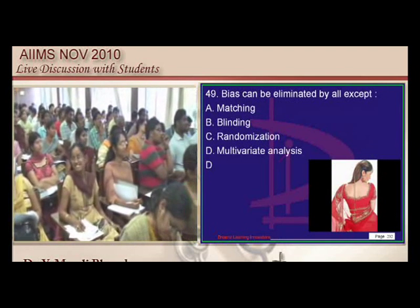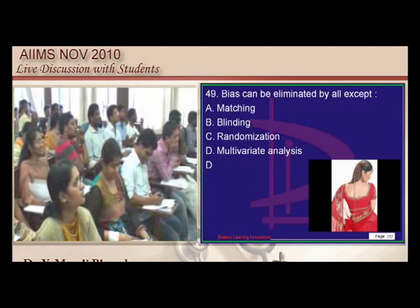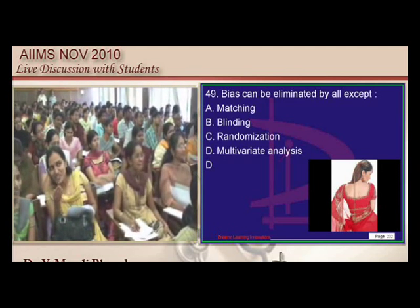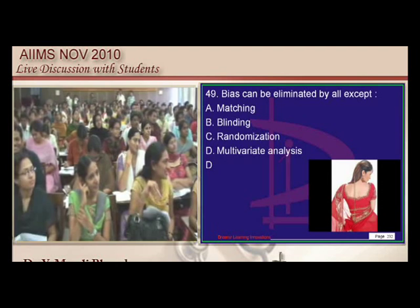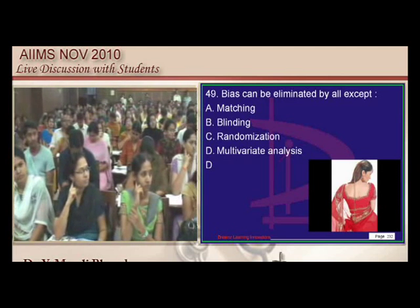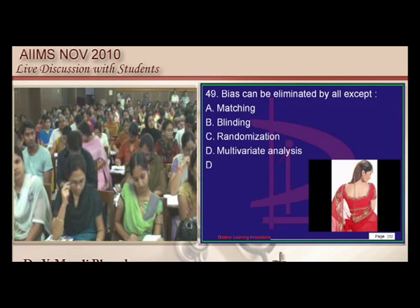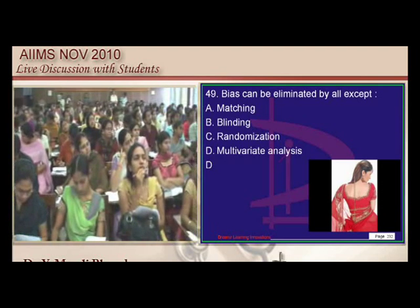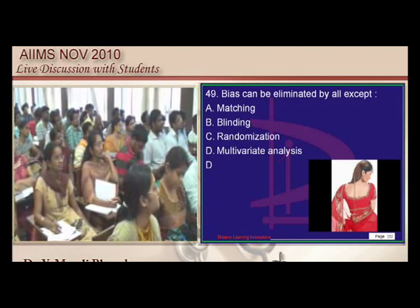Bias can be eliminated by matching. For example, if older people are dying naturally and you attribute it to watching TV, you need age matching to avoid that bias. Blinding is also a way to avoid interviewer's bias. Randomization is also a way to remove bias caused by the researcher.